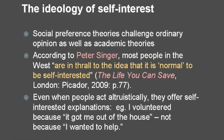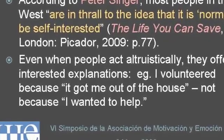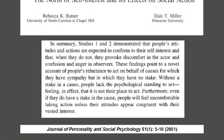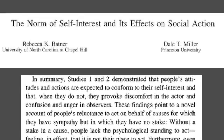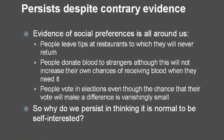A cynic might argue that the results of ultimatum game experiments will come as a surprise only to economists who have been brainwashed by their professional education into thinking that we are all selfish. But it isn't just economists who hold this view. According to the philosopher Peter Singer, most people in the West are enthralled to the idea that it is normal to be self-interested. For example, even when people act altruistically, they offer self-interested explanations — they say, 'I volunteered because it got me out of the house,' not 'because I wanted to help.' Singer's thesis is supported by some very interesting research done by Rebecca Ratner and Dale Miller on what they call the norm of self-interest. The interesting thing about this norm is that it persists despite a lot of contrary evidence. There are many examples from everyday life that people are not entirely self-interested creatures.